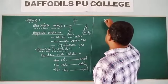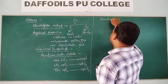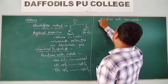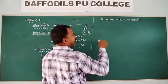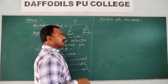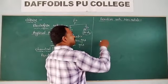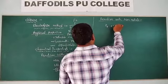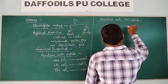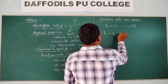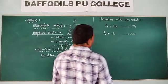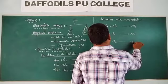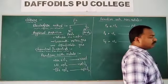Next is the reaction with non-metals. Chlorine is a strong oxidizing agent, hence it reacts with both metals and non-metals. When it reacts with non-metals like phosphorus, you will get PCl3 and PCl5. It also reacts with sulfur to give SCl2 and similar compounds.